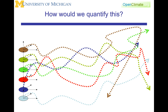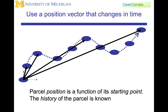If we were going to use this parcel approach, then each parcel would be represented by its own particular coordinate system. If we were to look at our original parcel and its motion, then you would see that the parcel position is a function of its starting point, and the position vector is going to be changing with time.